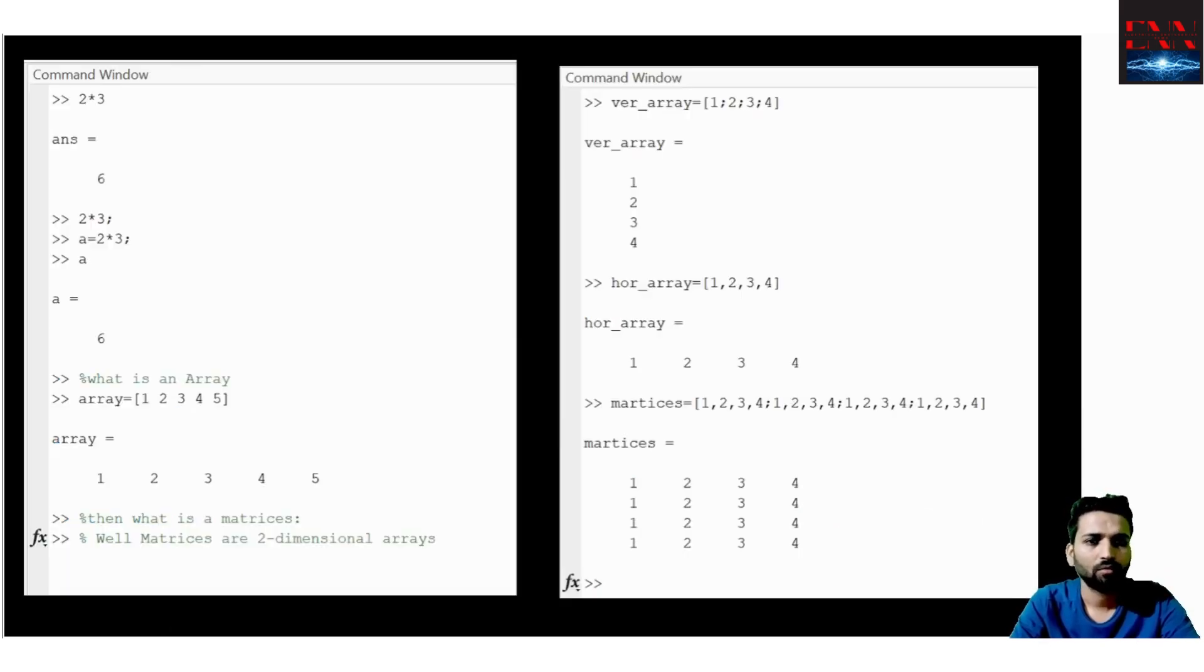Then we come to the command window. We have already seen the command window. Here in the command window you can see that I have written a basic example: 2 into 3 and the answer is coming 6. This is the very elementary thing you can do using the MATLAB command window. Then what I am doing is I am saving these results into A. Here A becomes a variable.